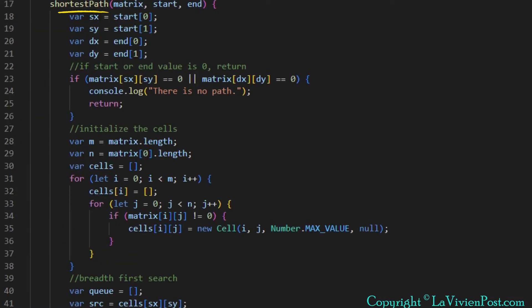At the top of the function, it checks whether the start and end cell's values are 0. If either of them is 0, it means there is no path and return.